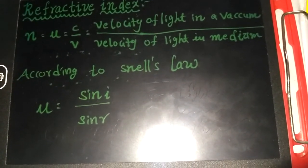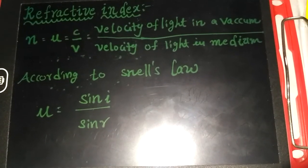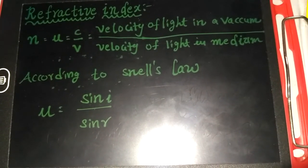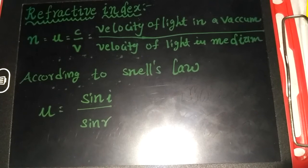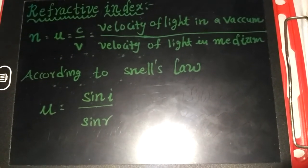In the water, the velocity is more and in the glass, the velocity is less. Why? Because glass is a denser media. Thank you.